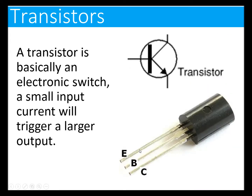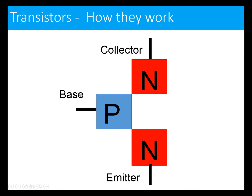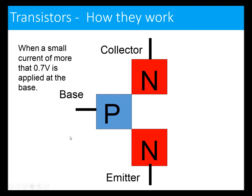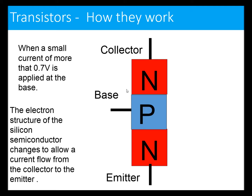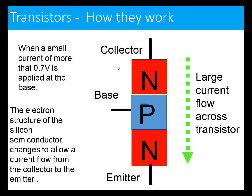A transistor is basically an electronic switch. A small input on the middle leg will trigger a much larger output. We've got the base, collector, and emitter. How transistors work is: when a small current is applied at the base, the electron structure of the semiconductor changes and allows current to flow through. That level of detail probably won't be required in the exam — it's just to understand how they work.